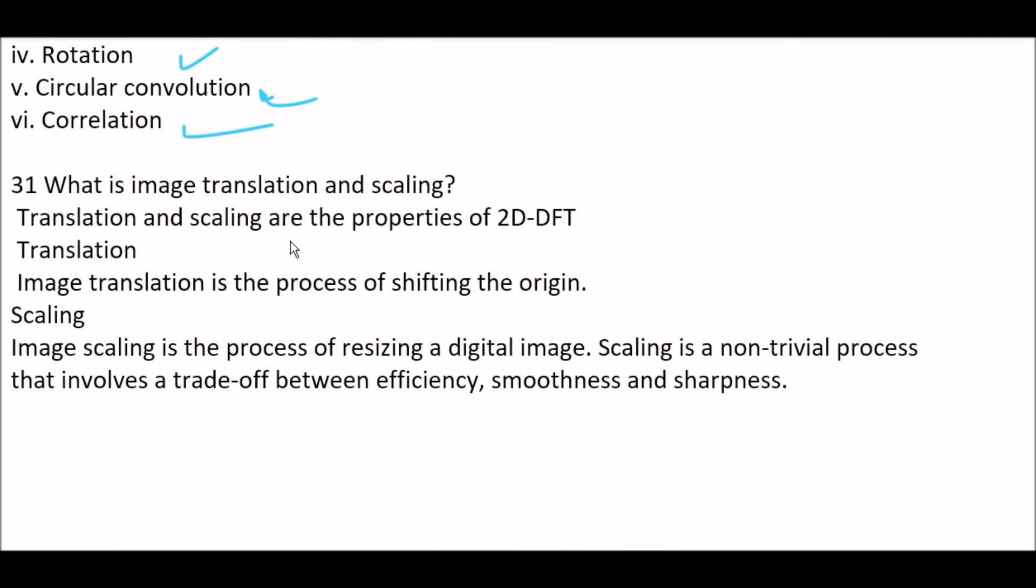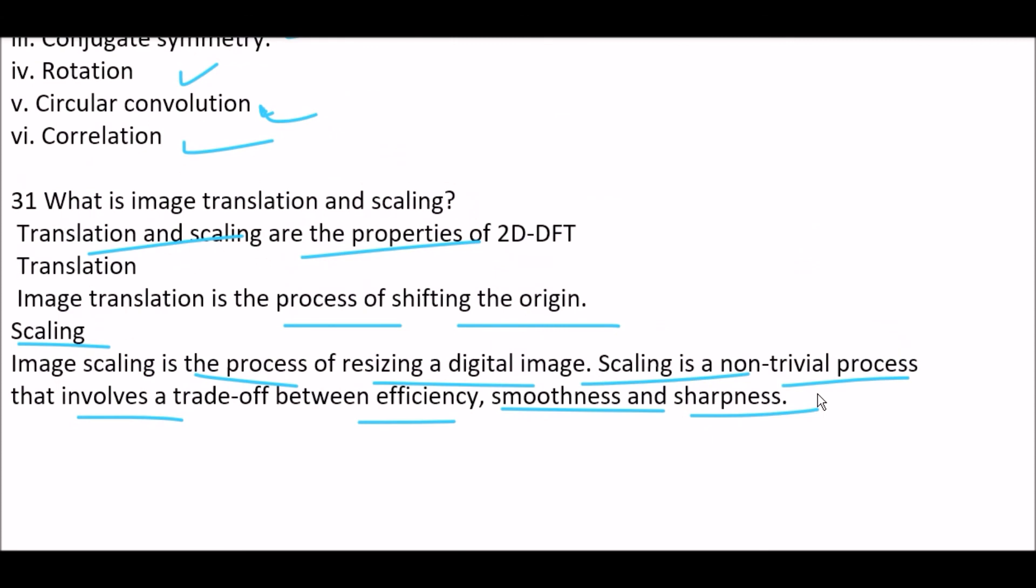And question number 31 is, what is image translation and scaling? Translation and scaling are the properties of 2D DFT. DFT stands for discrete Fourier transform. In translation, image translation is the process of shifting the origin. And in scaling, image scaling is the process of resizing a digital image. Scaling is a non-trivial process that involves a trade-off between efficiency, smoothness and sharpness.